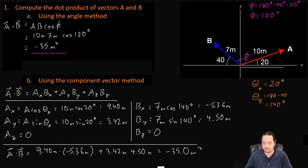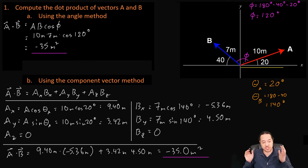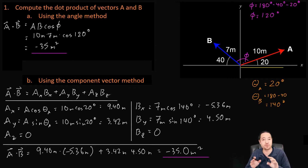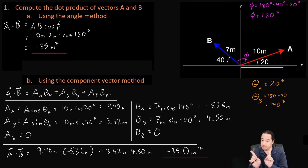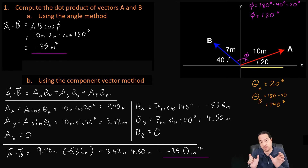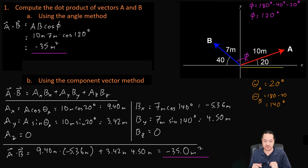That looks like a pretty good match. So I think we did it correctly. This is showing you that we have two different ways to compute the dot product: we can use the angle between them and their magnitudes, or we can decompose them in IJK component form and directly compute from the components.